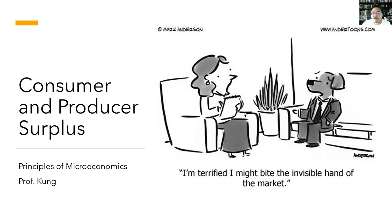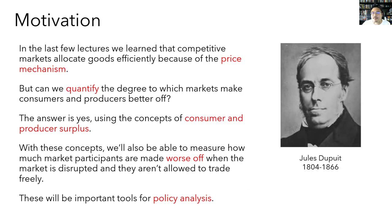Hello again, Econ 160, and welcome to another video lecture. Today we're going to be talking about consumer and producer surplus. In the last couple of lectures, we've been diving deep into how markets function through the forces of supply and demand. We learned that competitive markets allocate goods efficiently because of the price mechanism. In this lecture, we're going to ask whether we can quantify the degree to which markets are making consumers and producers better off, and we're going to measure that with these two concepts known as consumer and producer surplus.